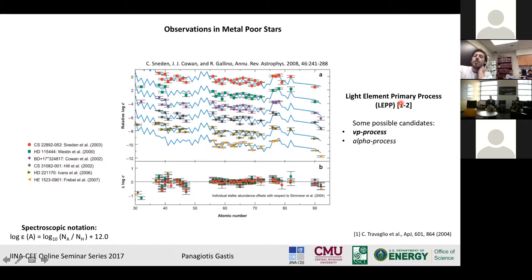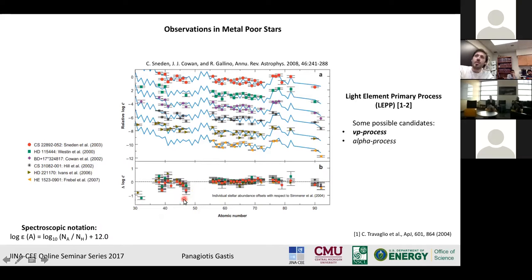There are various processes that may play the role of LEPP, and one of them that we will discuss today is the neutrino P process, which basically produces light elements only up to Z equals 50. So we can have a contribution from the νp-process in the formation of these nuclei.